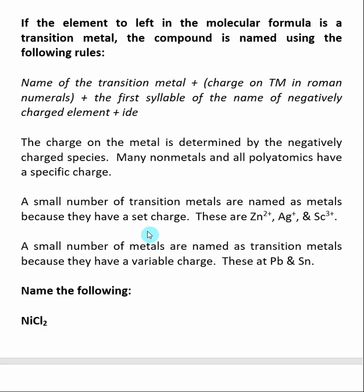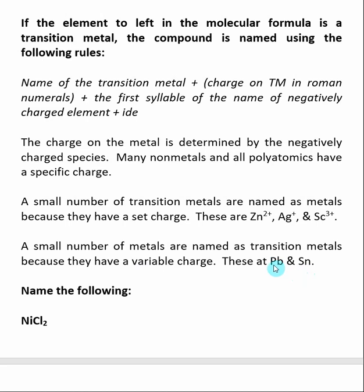Remember there are a few exceptions. A small number of transition metals are named as regular metals because they have a set charge — these are zinc, silver, and scandium. So even though these are in the transition metal section of the periodic table, they are not named as transition metals. Conversely, lead and tin are named as transition metals because they have a variable charge, even though they are in the area for regular metals.